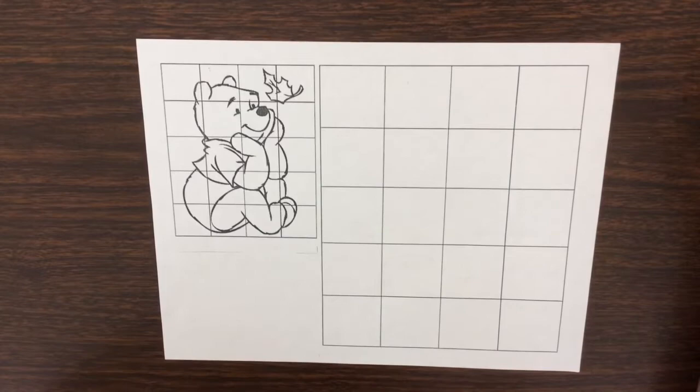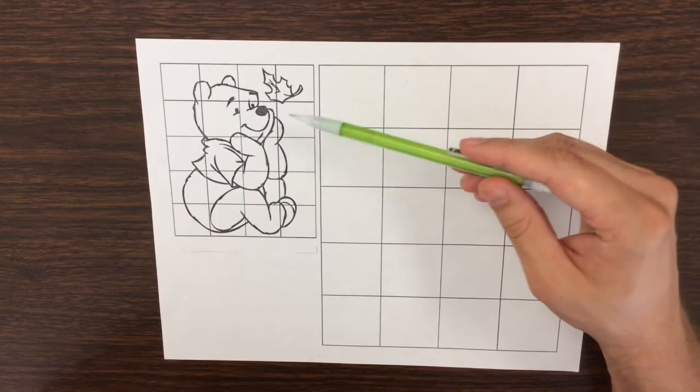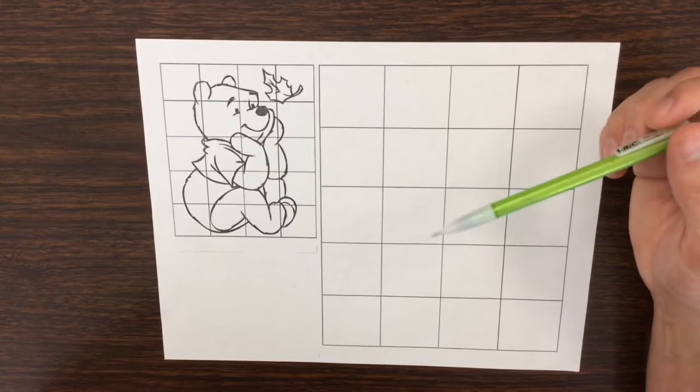Alright, for this demonstration I'm going to show you how to use simple fractions to create a drawing that is proportionately correct. I already have a picture of Winnie the Pooh set up for you right here and a grid that's already set up on this worksheet, and I'm going to show you how to break down these lines using simple fractions to make them accurate on my drawing.